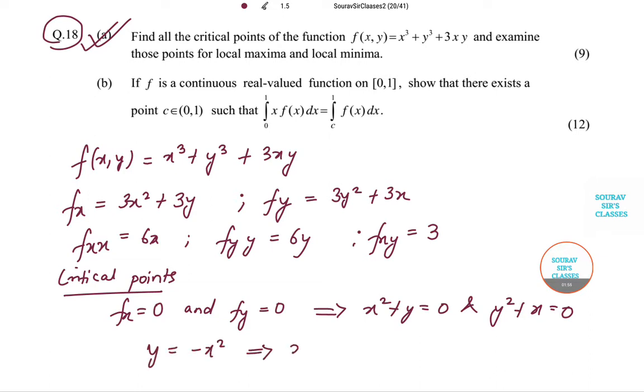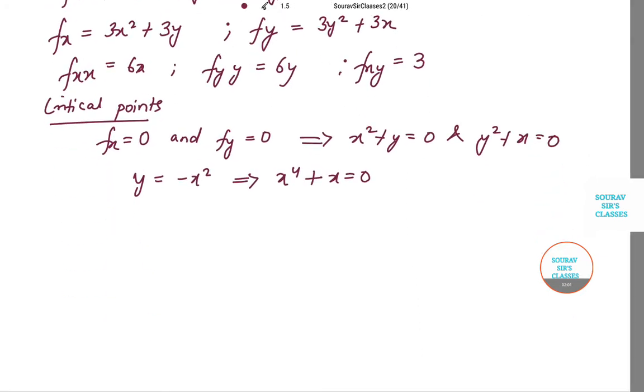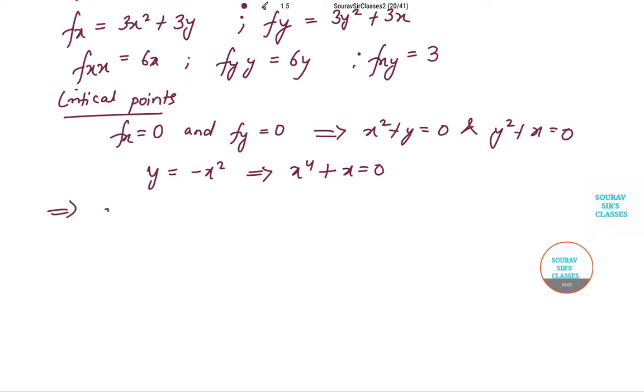This implies that x to the power 4 plus x is equal to 0. So this implies that x(1 plus x cube) is equal to 0, or the value of x becomes 0 and minus 1. So these are the critical points.